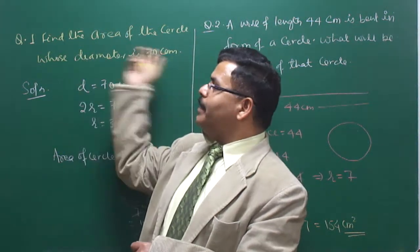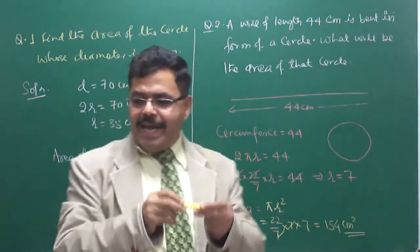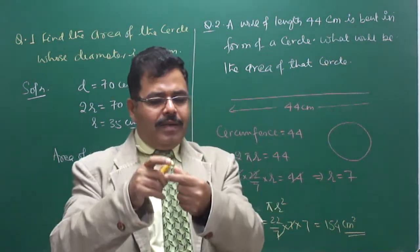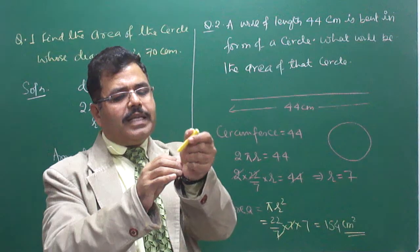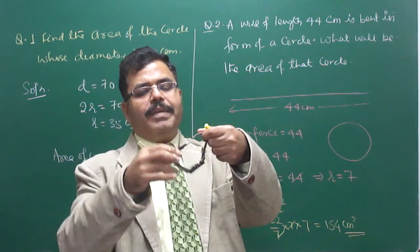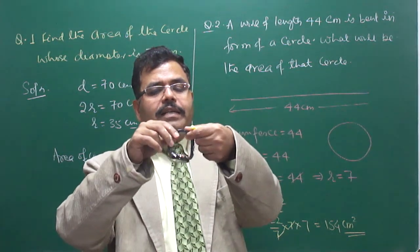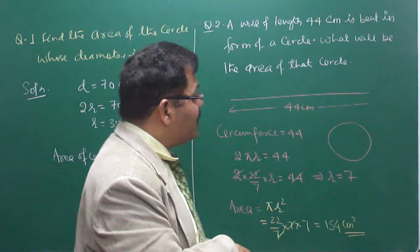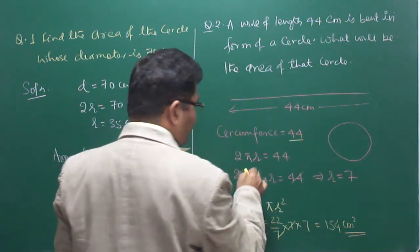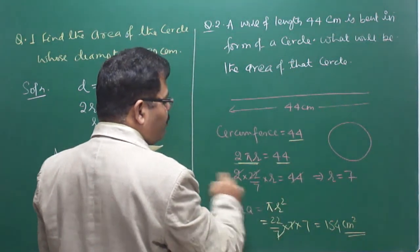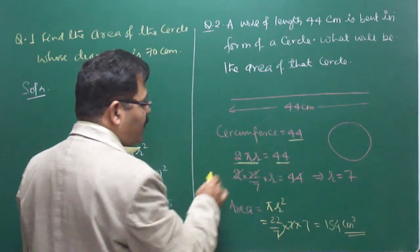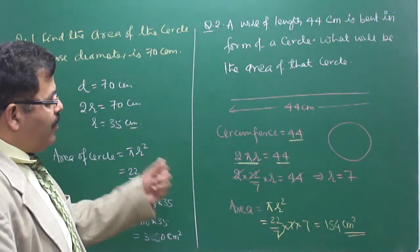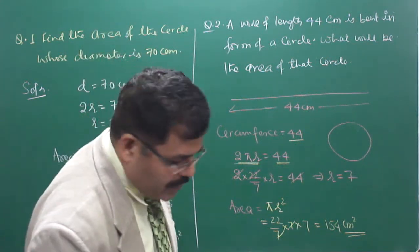This is a conceptual question. A wire is given and bent in form of a circle — like a wristwatch band. The total straight length of the wire equals the circumference of the circle. So wire length = circumference, meaning 2πr = 44. Solving: r = 7, and area = πr² = (22/7) × 7 × 7 = 154 cm².